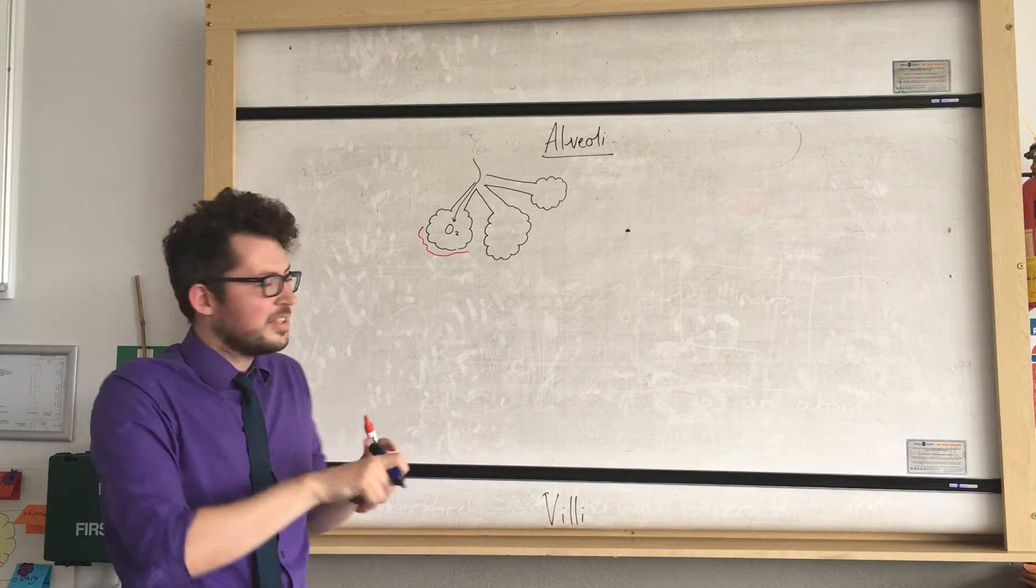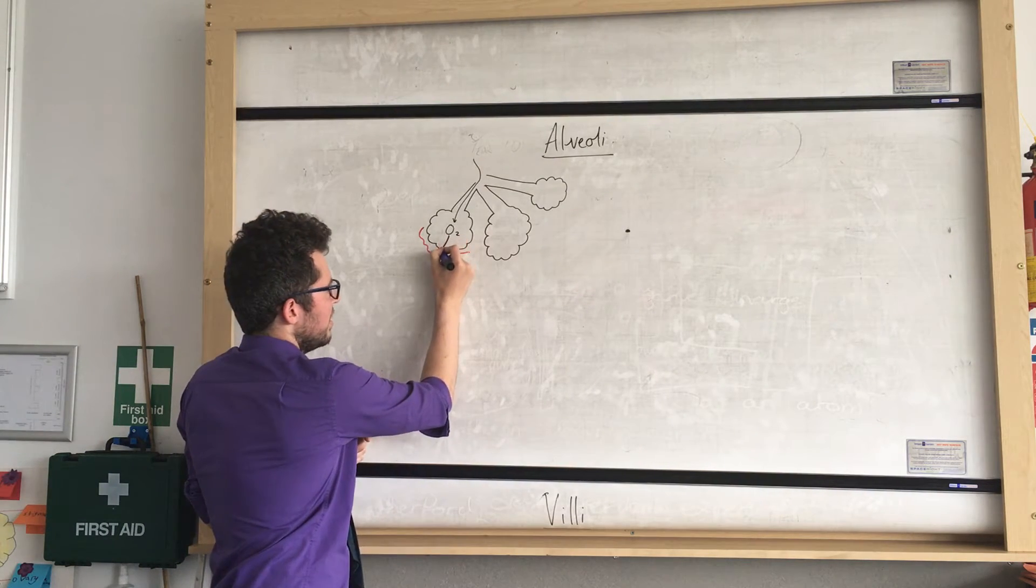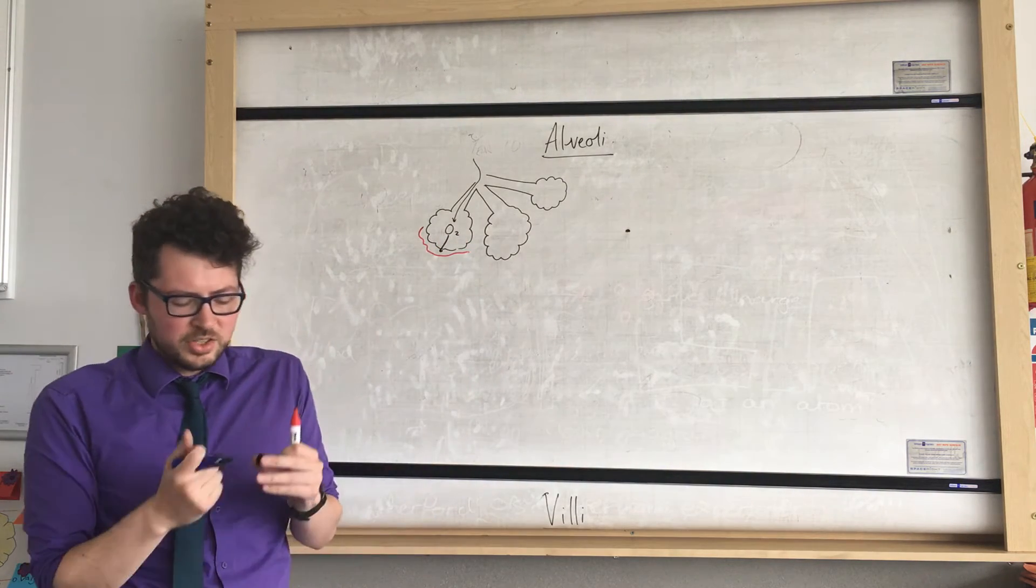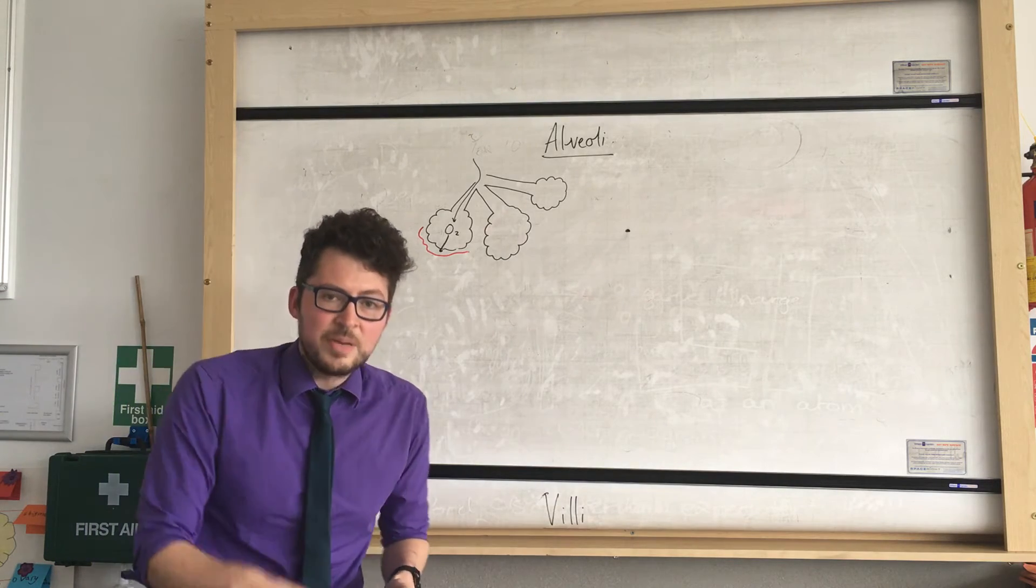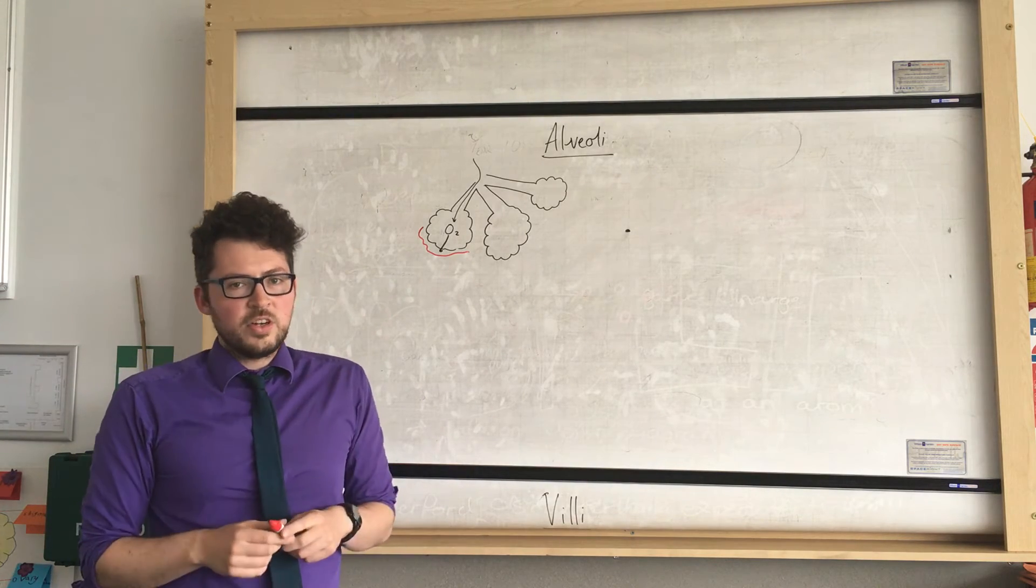what happens is oxygen will then diffuse into our bloodstream. So it diffuses from the alveoli into the bloodstream and then is carried around the body for all of the body's functions.